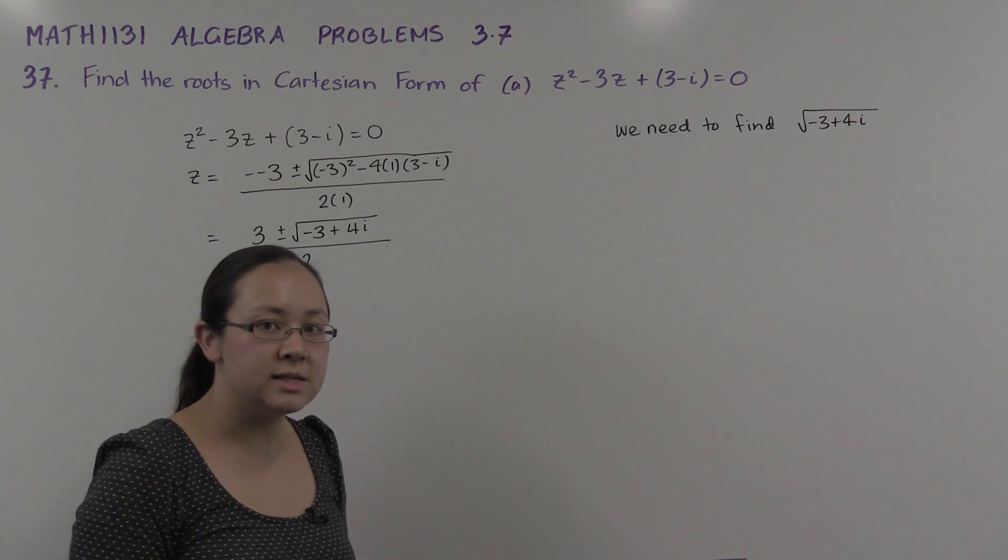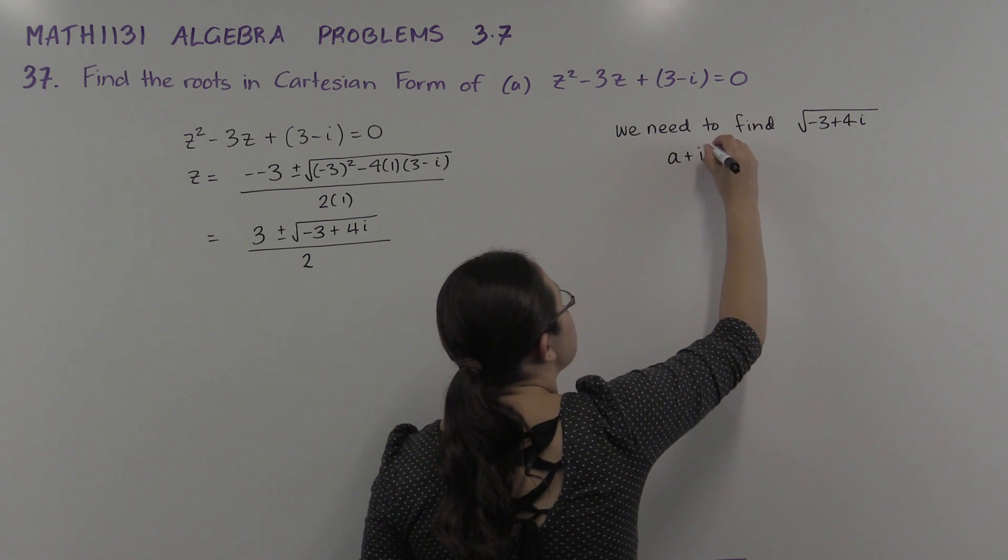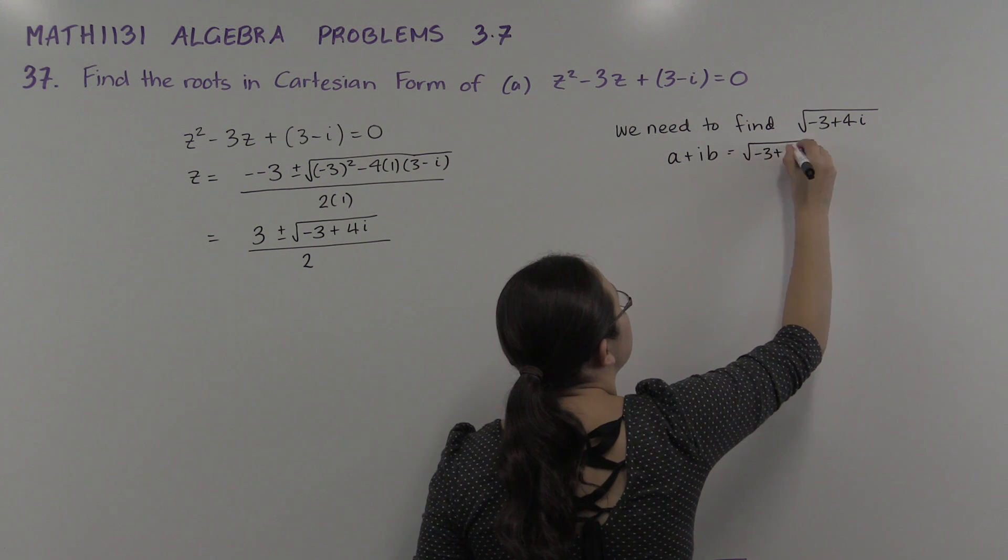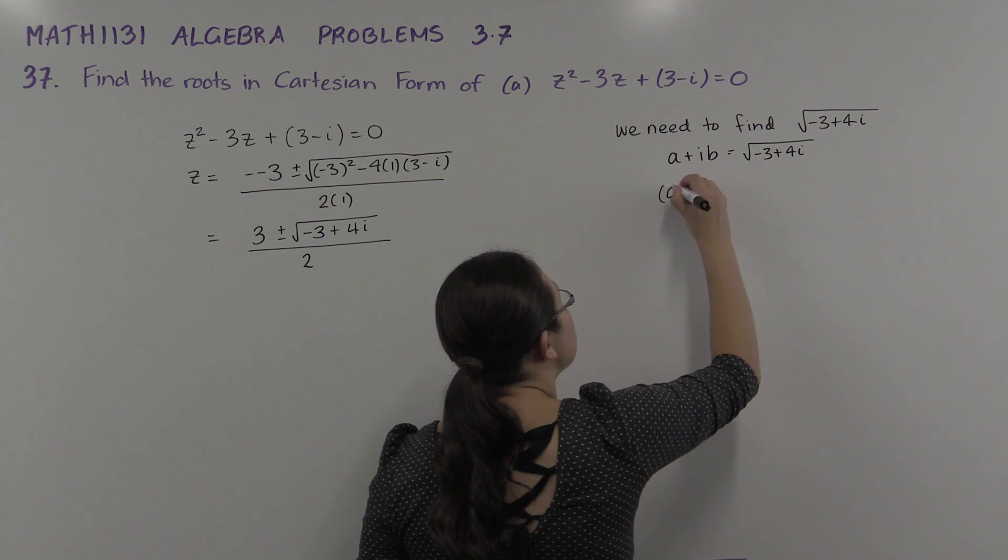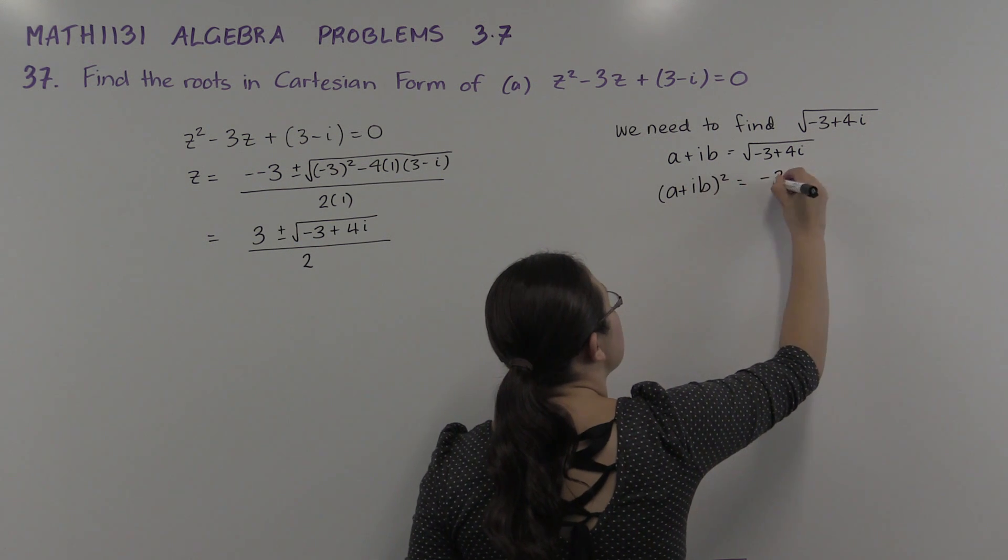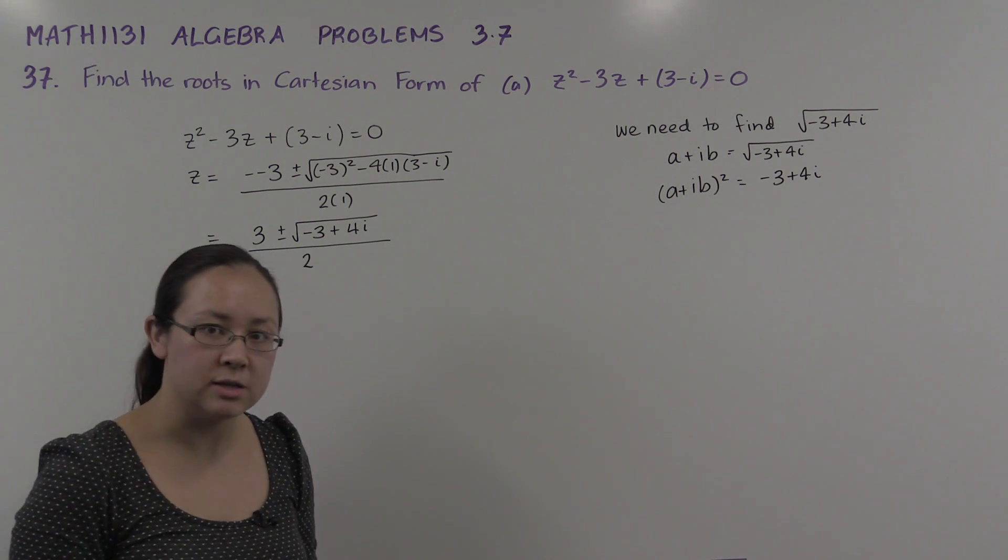In other words, I could say let a + ib be that square root. And if I square both sides, I'll just get (a + ib)² = -3 + 4i.